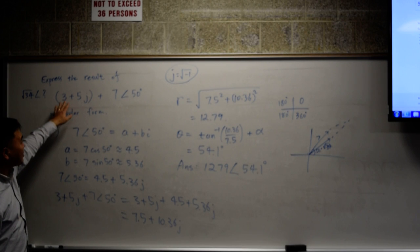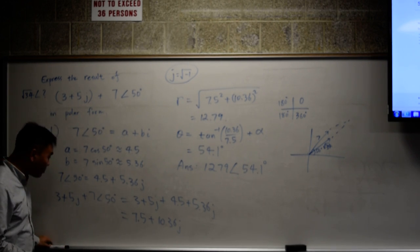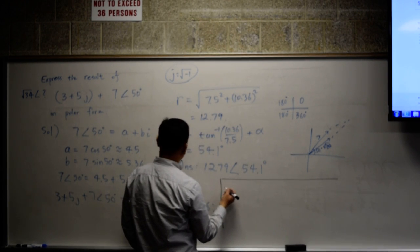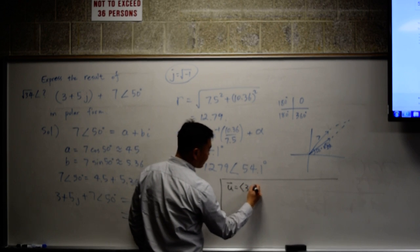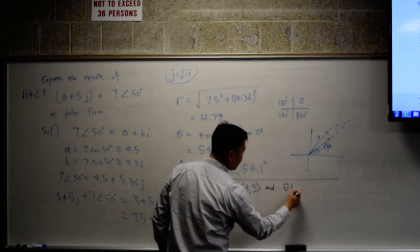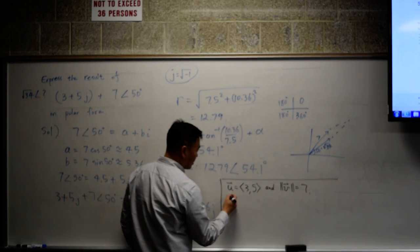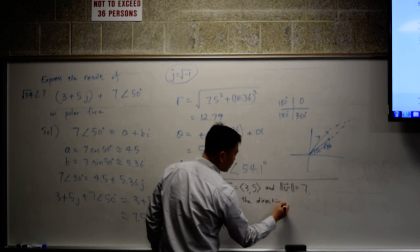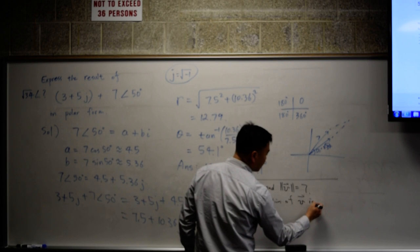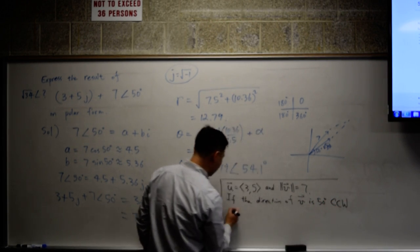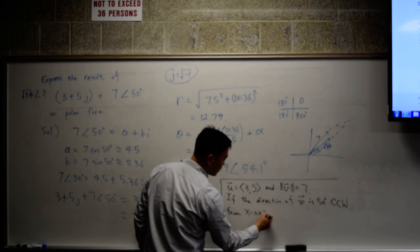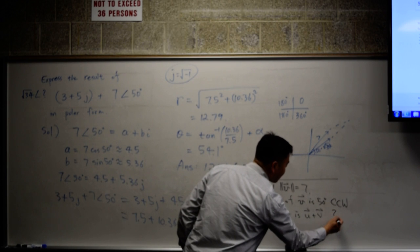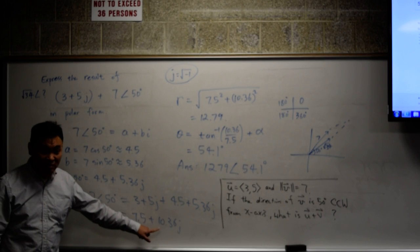You can also have a very similar question in the context of vectors. A similar question would be, if you have u as 3, 5 and v magnitude is 7, if the direction of v is 50 degrees counterclockwise from x-axis, what is u plus v? If you're asked something like this, in terms of coordinate form, the answer will be 7.5 comma 10.36.